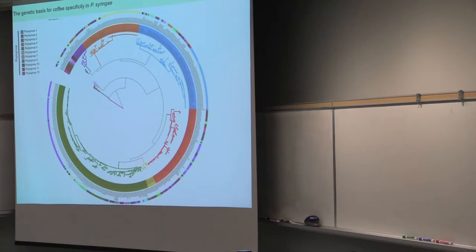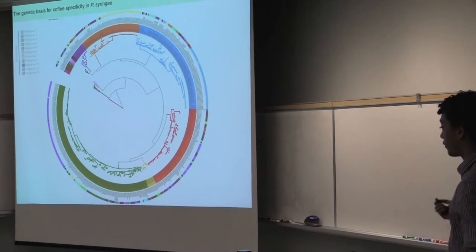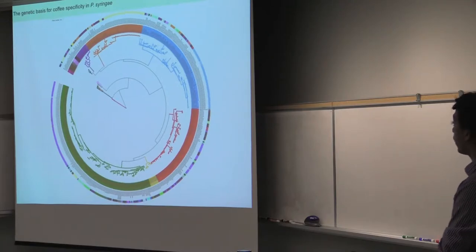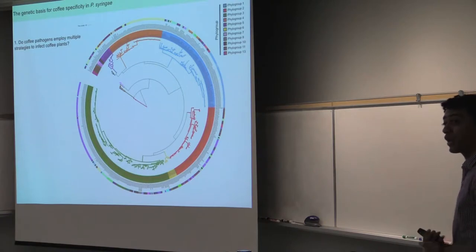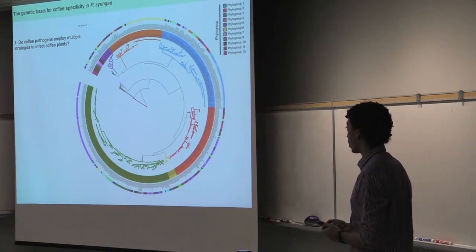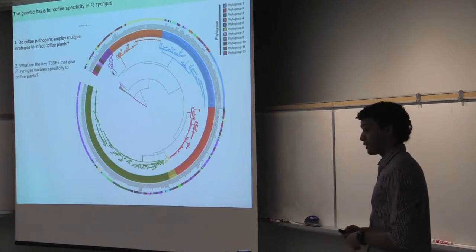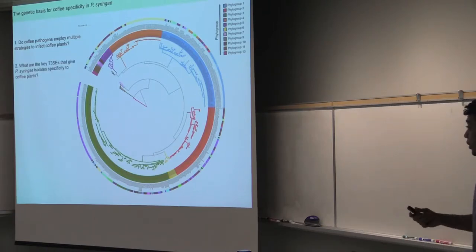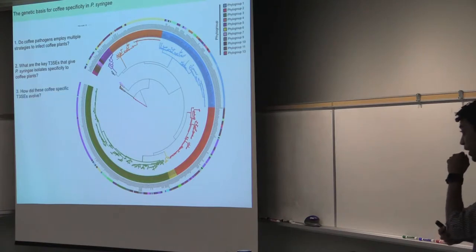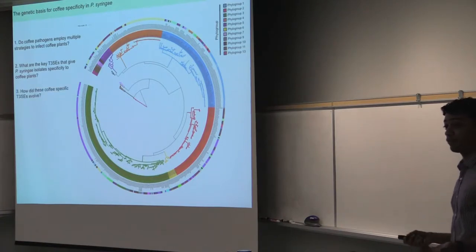So based on this, we know that these coffee isolates come from three different lineages. So the first question that I'm going to be addressing today is, do these three different lineages affect coffee using the same strategy? Or do they have different strategies that they evolved to cause disease in these hosts? The second one is going to be, what are the type 3 effectors that are involved in each one of these strategies? And at the end, how did these type 3 effectors evolve in the first place?